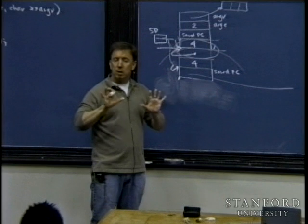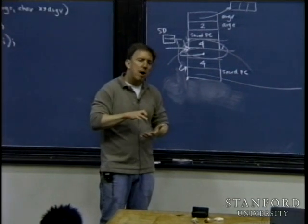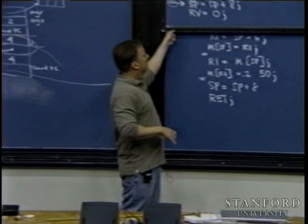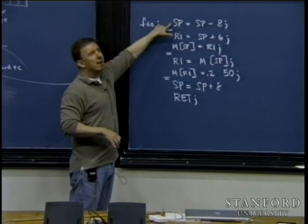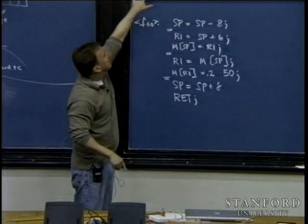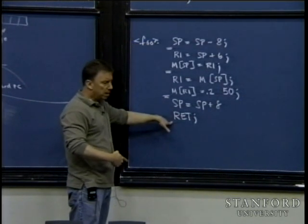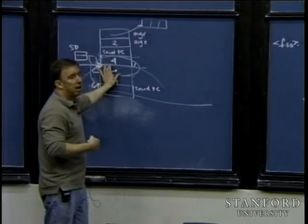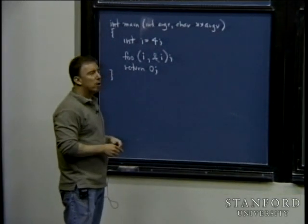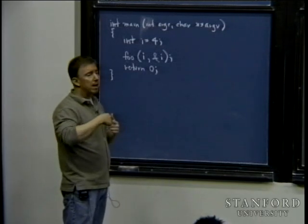The caller knows exactly how many parameters there are, can look at the prototype, and knows how to initialize them — that's why the top half is set up by the caller. The bottom half, the caller doesn't even know how many local variables there are, much less how to manipulate them. So you rely on the callee function to complete the picture by adjusting SP to make space for locals. RET is an instruction to jump back to whatever address occupies the saved link.